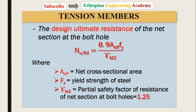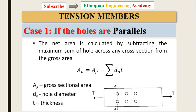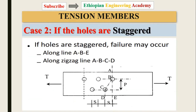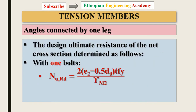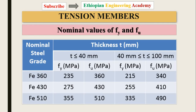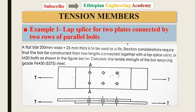We covered formulas for the net cross section for parallel and staggered bolts, and for angles connected by one leg, along with the design constants. In this video I will show you how to determine the tensile strength of a bar using Example 1: a lap splice for two plates connected by two rows of parallel bolts.